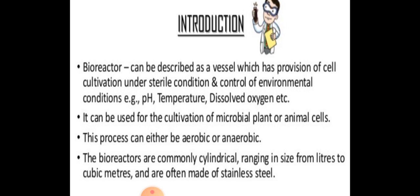In bioreactors, the conditions are artificially maintained - optimum pH, optimum temperature, and sufficient dissolved oxygen - so that the cells can grow and we can get the desired product.